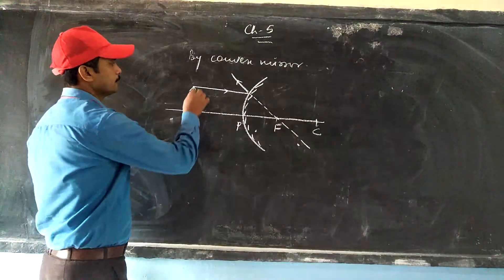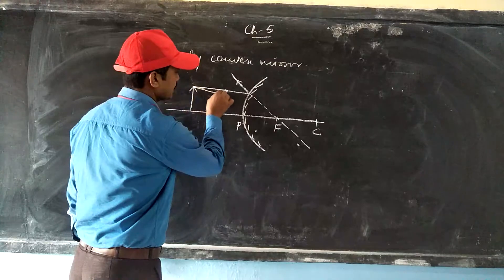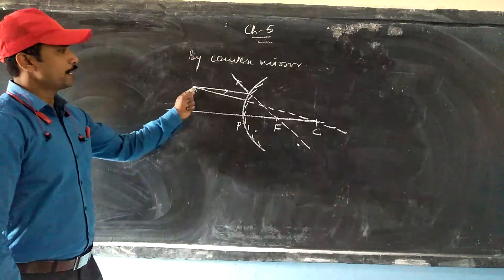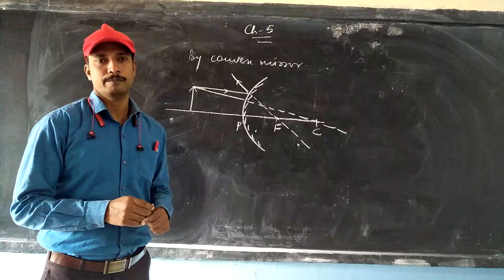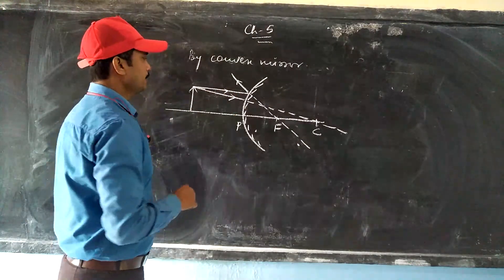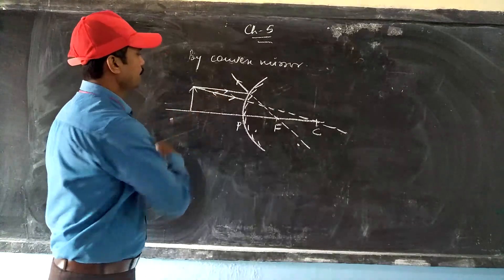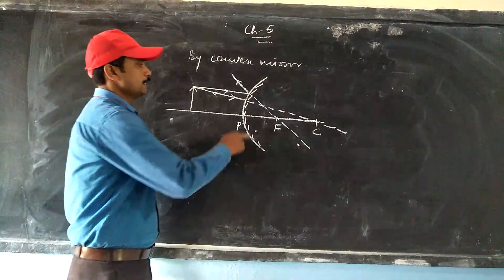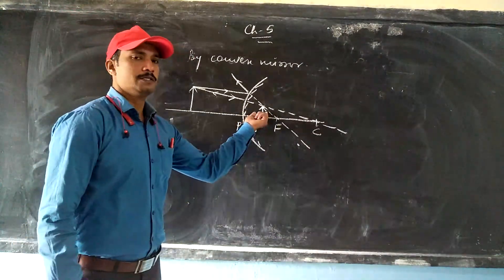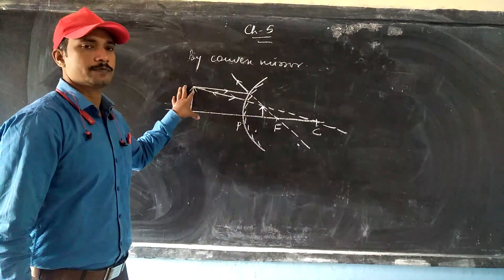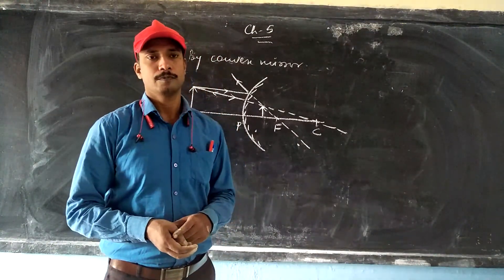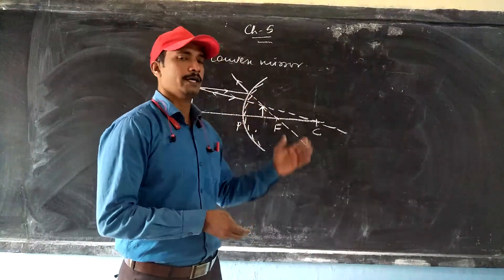The second ray is directed towards the center of curvature. The ray cannot actually pass through the center of curvature, but it falls on the mirror as if it appears to pass through it, and it reflects back along the same direction. The two reflected rays are seen to meet between the pole and focus. The image is always smaller than the object, which is why this mirror is used as a rear-view mirror in vehicles.